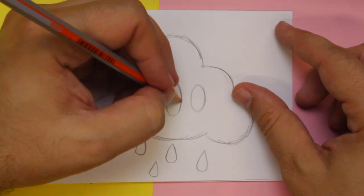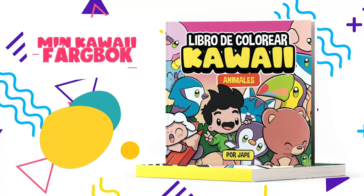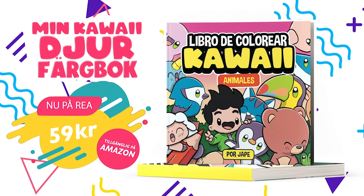A Tisket, a Tasket, a green and yellow basket. I wrote a letter to my love and on the way I dropped it. Och ha kul att måla mig att målarböcker.